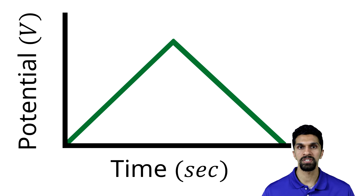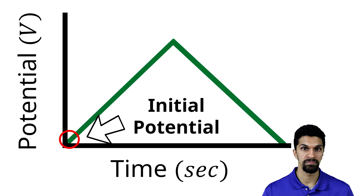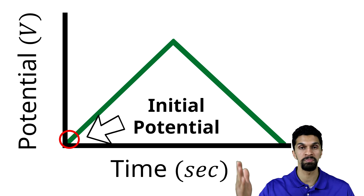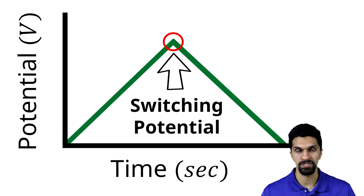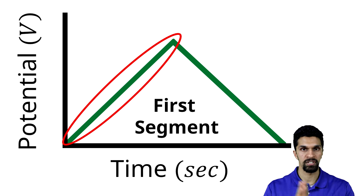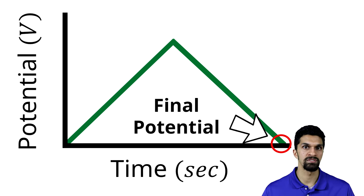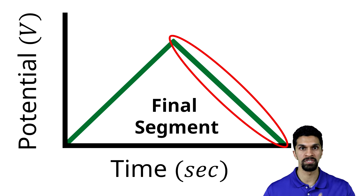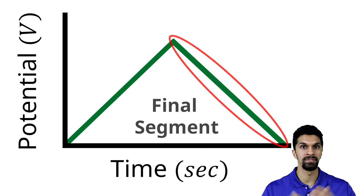The triangular potential waveform has several parameters. It has an initial potential, which is the start of our experiment — the point where we begin to sweep the potential. We then sweep it to the switching potential, which defines the end of the first segment of our triangular potential waveform. And then we have the final potential, which defines the second segment of our linear sweep, completing the triangular waveform.